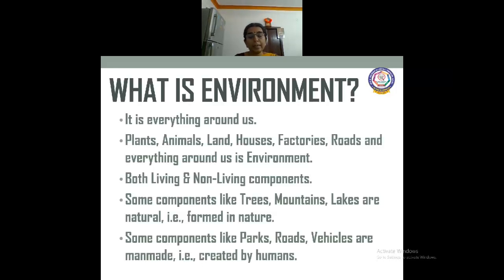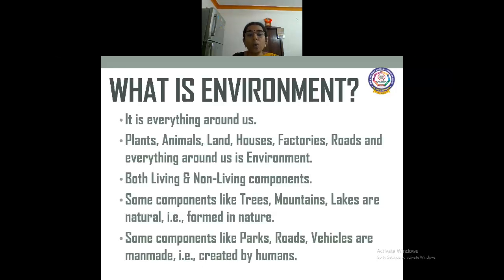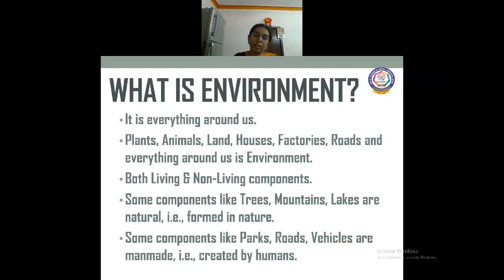Biotic and abiotic components interact with each other — they are interdependent. For example, we need food and we get food from plants as well as animals. Similarly, plants need soil to grow, and soil provides nutrients to the plants. These nutrients dissolve in water to give more effect to the plants. The leaves also produce food using carbon dioxide. Likewise, everything is interdependent on each other.